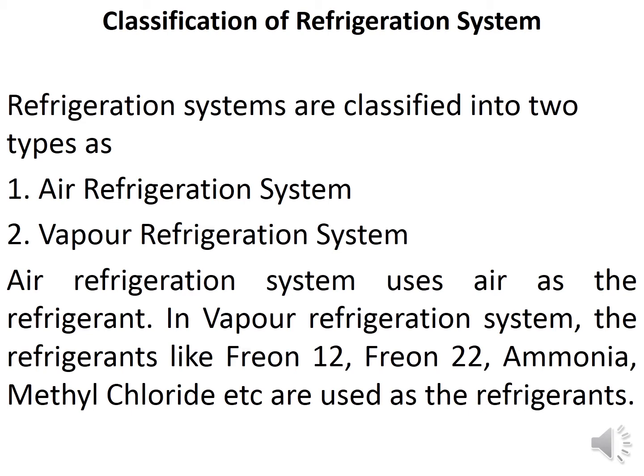Refrigeration systems are classified into mainly two types. One is air refrigeration system, second one is vapor refrigeration system. Air refrigeration system uses air as a refrigerant. In vapor refrigeration system, refrigerants like Freon 12, Freon 22, Ammonia, Methyl Chloride etc. are used as refrigerants.